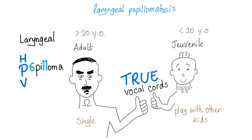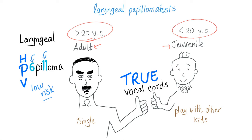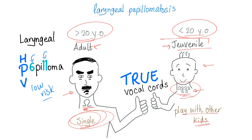In the juvenile type — children under 20 — there are multiple papillomatoses, because kids play together. In adults over 20, it is usually a single lesion, because many adults are lonely. The mnemonic: kids play together — multiple; adults are lonely — single. Both types affect the true vocal cord. HPV serotypes 6 and 11 are low-risk, drawn in light color.